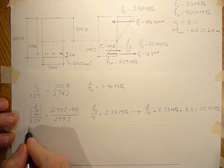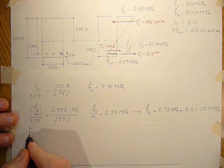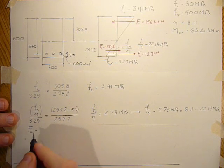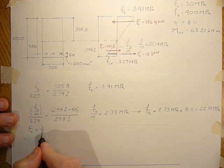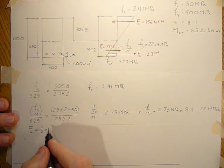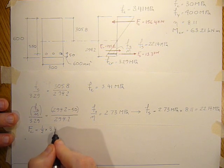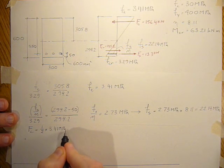So we'd have force in the concrete is equal to one half times 3.41 MPa.